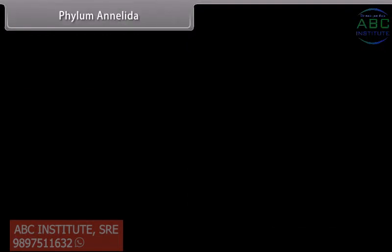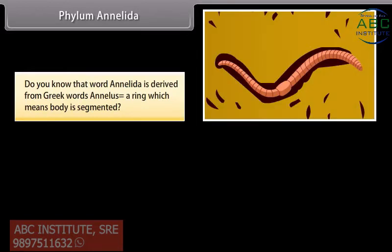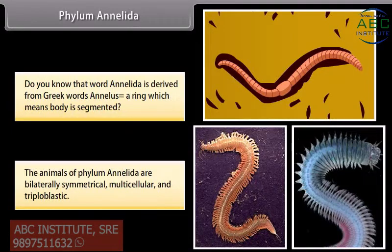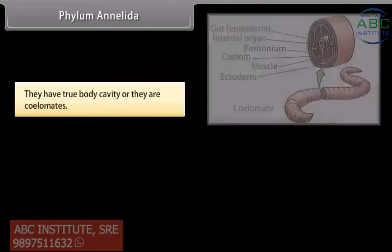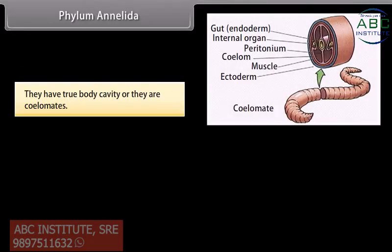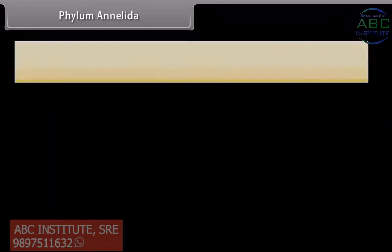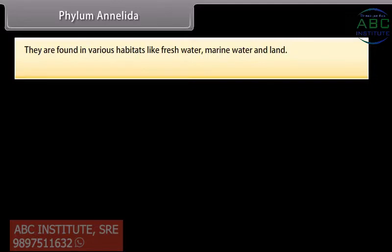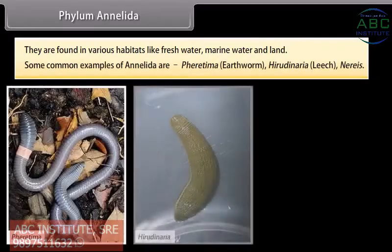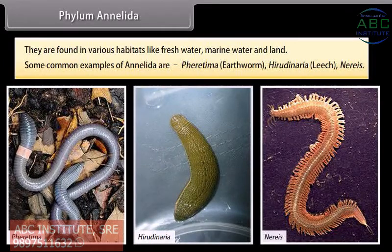Phylum Annelida. The word annelida is derived from Greek word 'analis' meaning ring, which means the body is segmented. The animals of phylum Annelida are bilaterally symmetrical, multicellular and triploblastic. They have a true body cavity, so they are coelomates. Organs are present and distributed in a metamerically segmented body. They are found in various habitats like freshwater, marine water and land. Common examples are Pheretima (earthworm), Hirudinaria (leech) and Nereis.